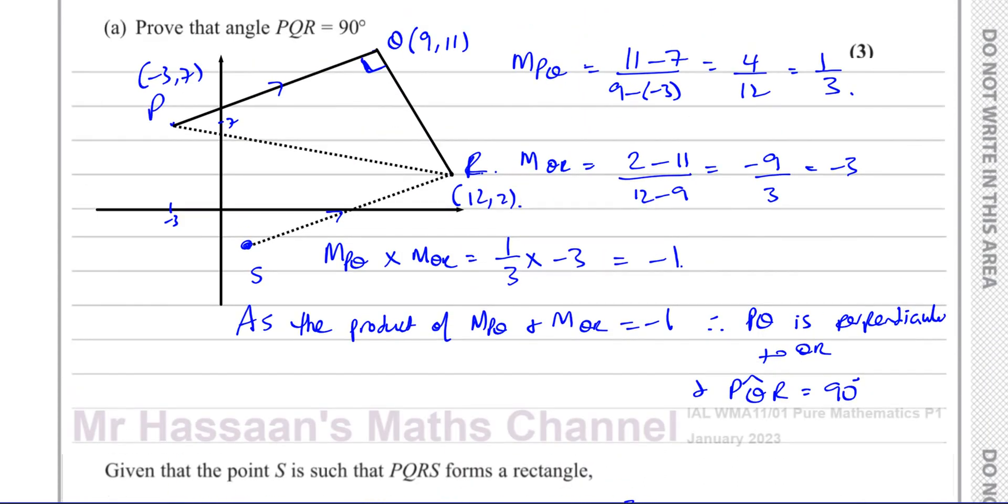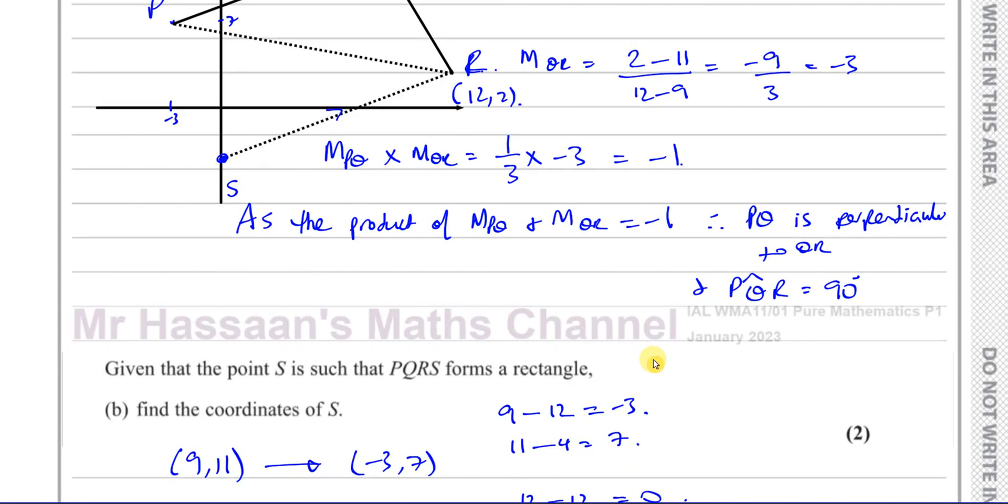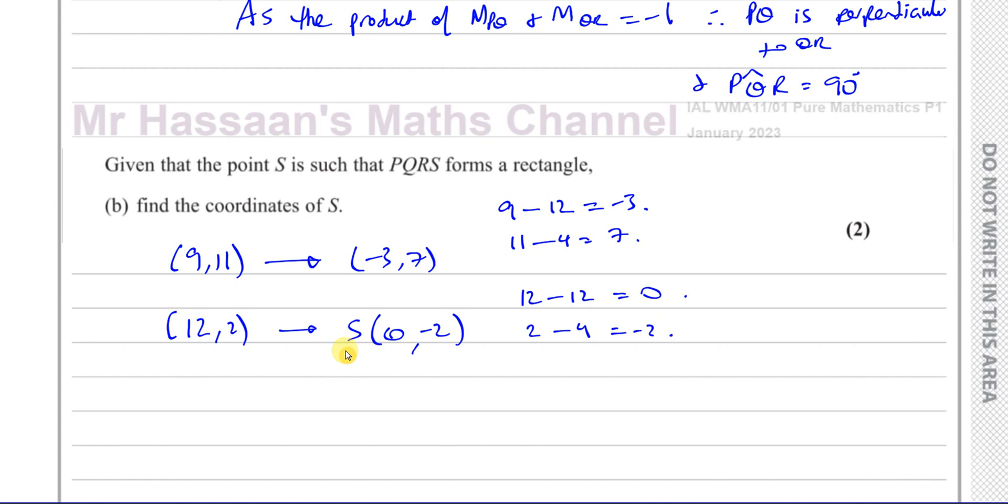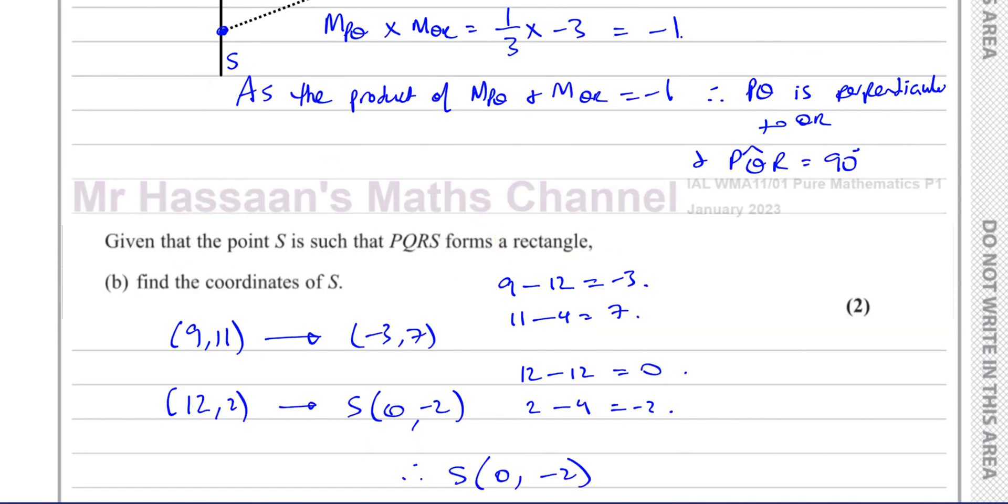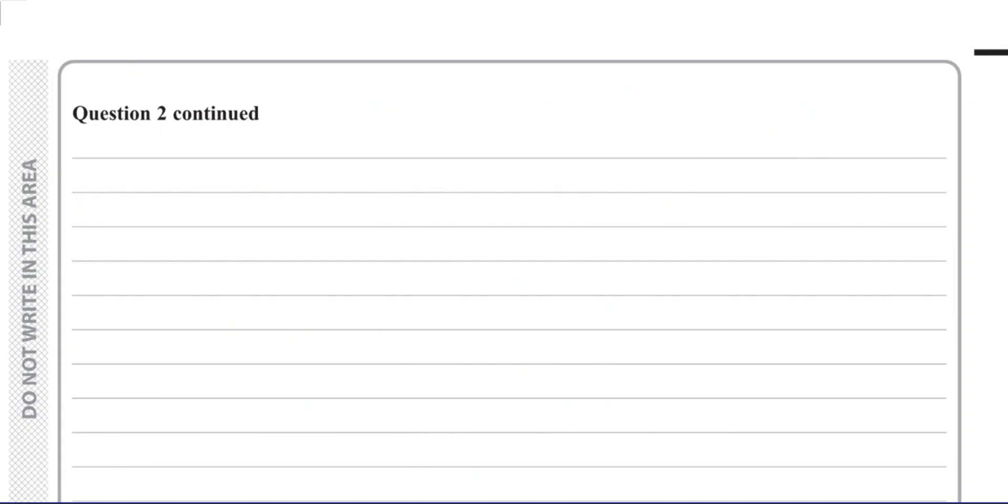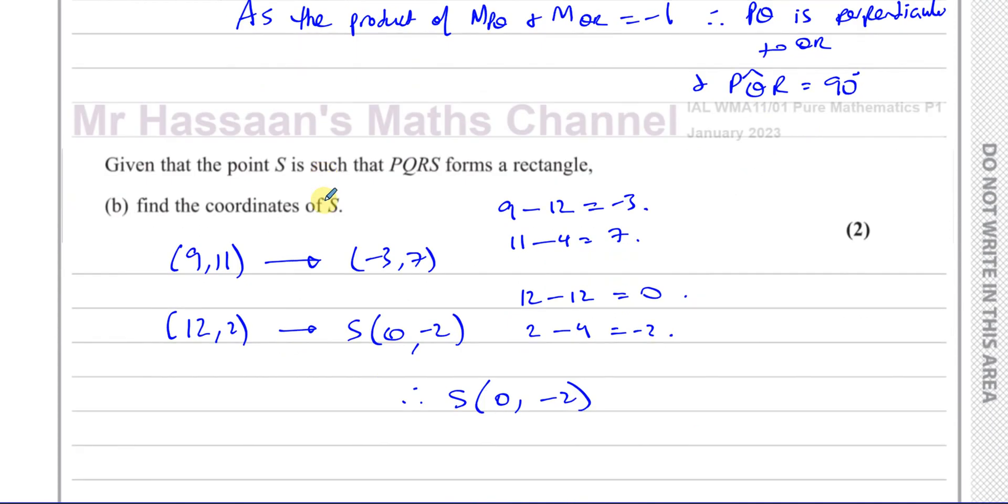In fact, it's going to be right down here. That's where S is going to be. So 0, negative 2 are the coordinates of S. S has coordinates 0, negative 2, and there is the answer to part B. That was question number 2 part A and B.